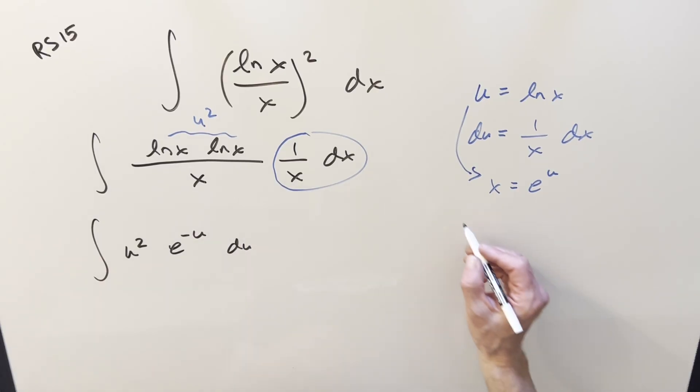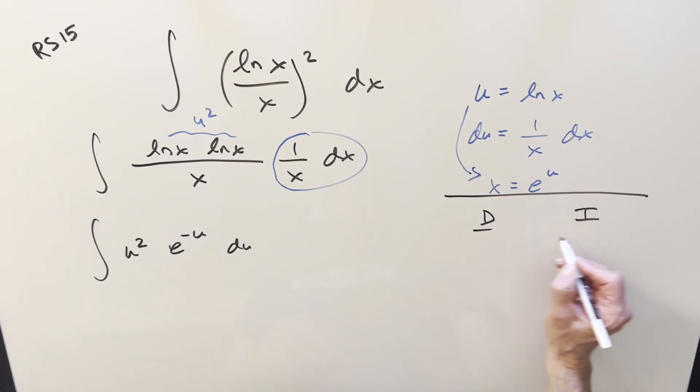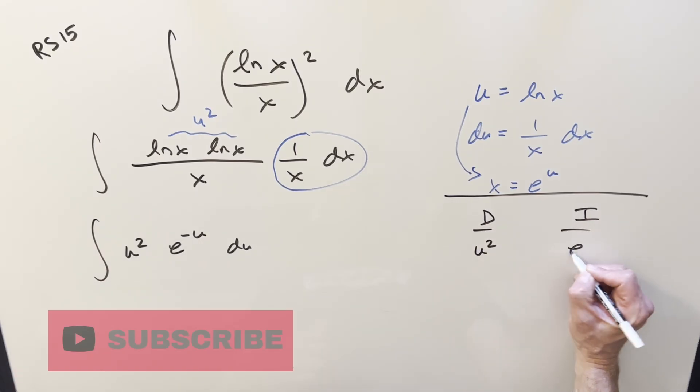But now this is not too bad. We can just do integration by parts on it. I'll do a quick DI table over here. Let's differentiate u squared, because we can differentiate it all the way to 0.